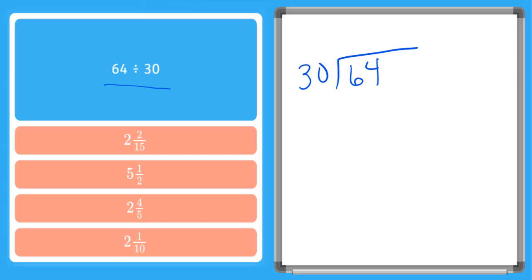So you might know from your fact family that 30 goes into 60 two times. So 30 times 2 is 60. So I can put a 2 up here. And I say 2 times 30. I multiply these, give me 60. I subtract this. I have a 4 remaining.